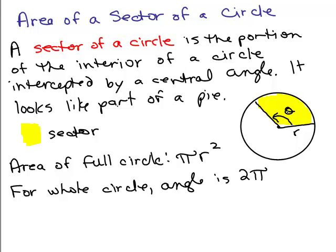But this is part of the circle. I'm only going part of the way around. So, I'm going theta over 2 pi. It's a ratio theta over 2 pi. That's the part of the circle I want.